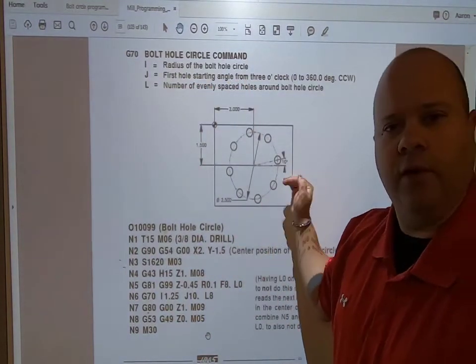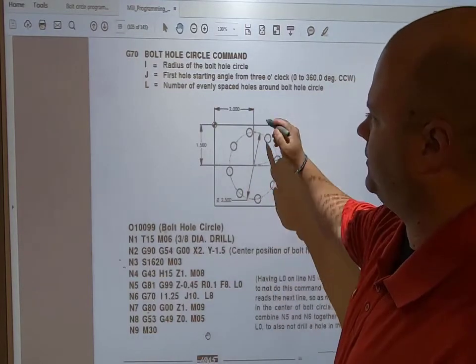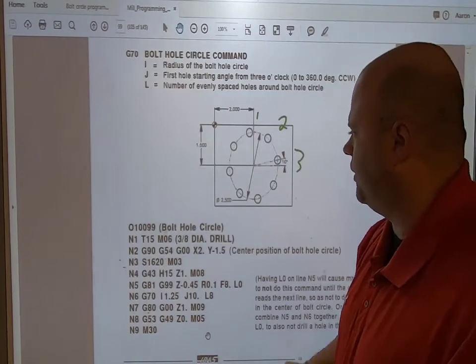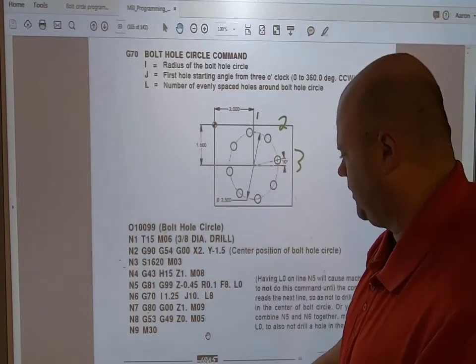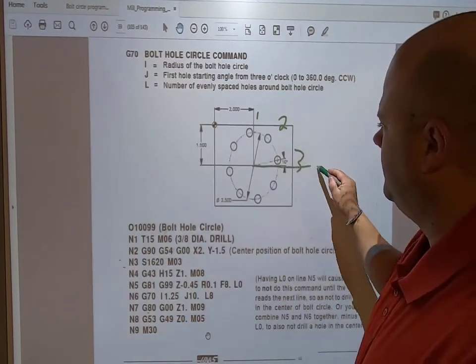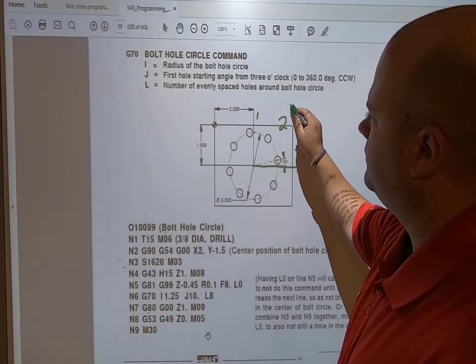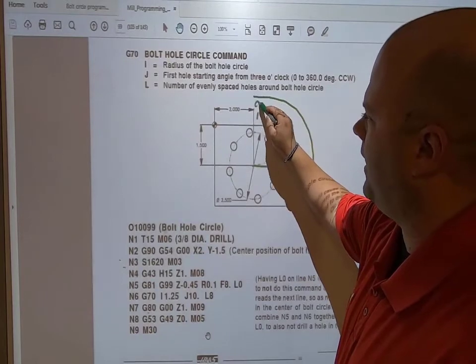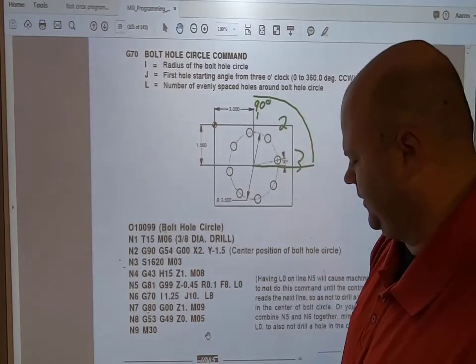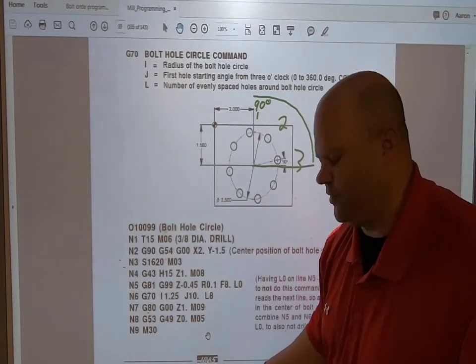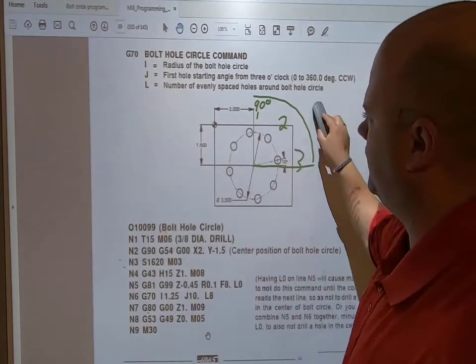J is the first hole starting angle, starting from three o'clock. So from three o'clock, that's where we're going to start. Right here would be 90 degrees, so if I was programming it, that's how it would look.